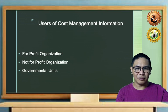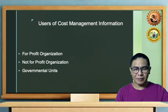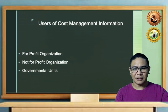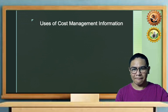Let us go to the users of cost management information. As discussed, cost management information is used by not-for-profit organizations and government units as well. For a profit organization, their primary function is to determine how to earn a profit, achieved through the use and proper management of cost management information. For not-for-profit organizations and government units, the primary purpose is to provide quality services, and they need cost management information in terms of quality, productivity, and other key success factors.